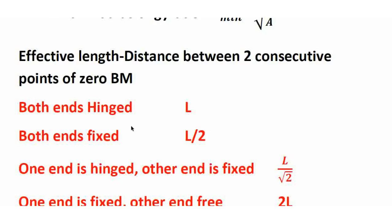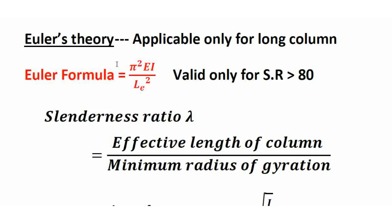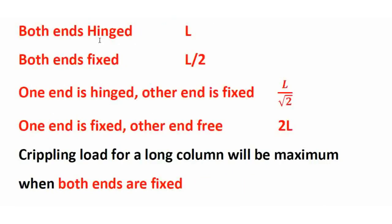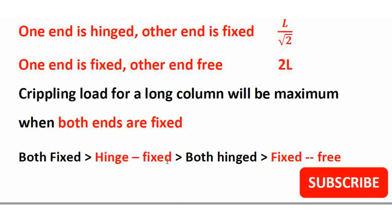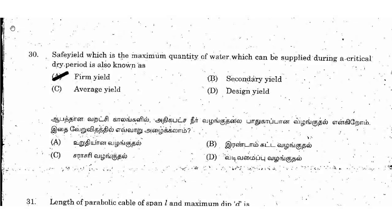Effective length is the distance between consecutive points of zero bending moment, and it varies with end conditions. For both ends fixed, effective length is L/2, so Euler's formula becomes 4π²EA/L² — the maximum crippling load. For fixed-hinge conditions, the effective length differs. The crippling load is maximum when both ends are fixed.